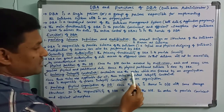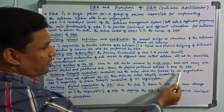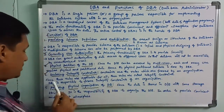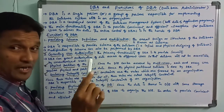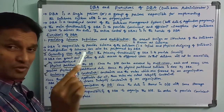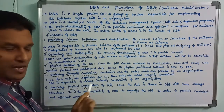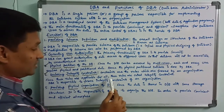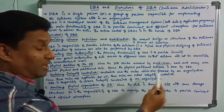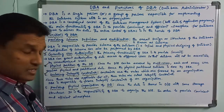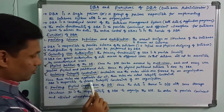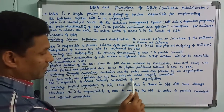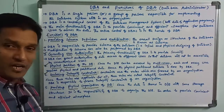Constraints are the rules which are framed by an organization. Since these rules are applicable at all database levels, these rules are called integrity constraints. DBA is responsible to frame integrity constraints for an organization.